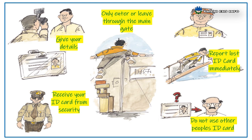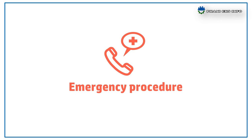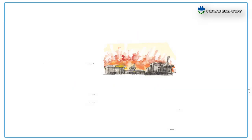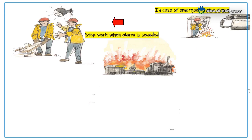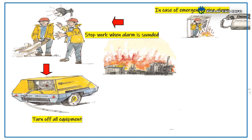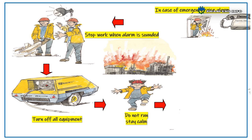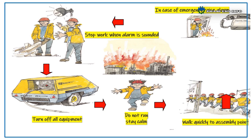Emergency procedure: In case of emergency, raise the alarm. Stop work when the alarm sounds. Turn off all equipment. Do not run — stay calm. Walk quickly to the assembly points and follow safety department instructions.